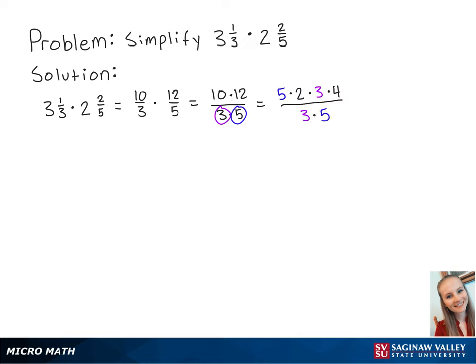Since we have a 5 on the top and the bottom, these will cancel out. And since we have a 3 on the top and the bottom, these will also cancel out.